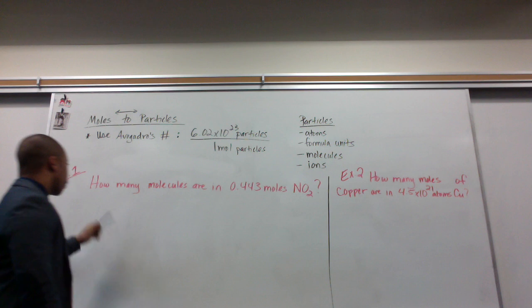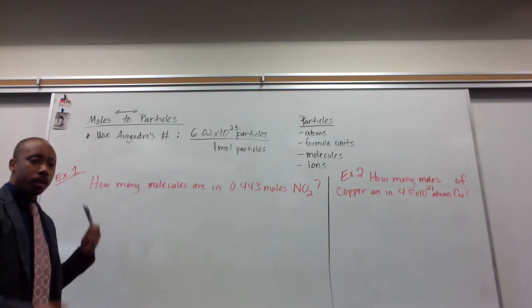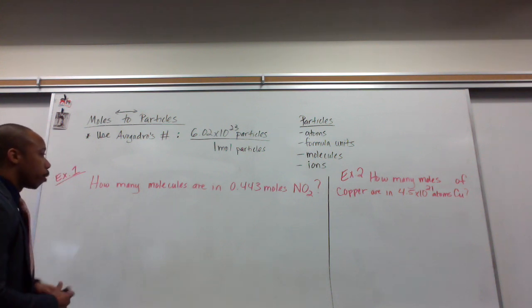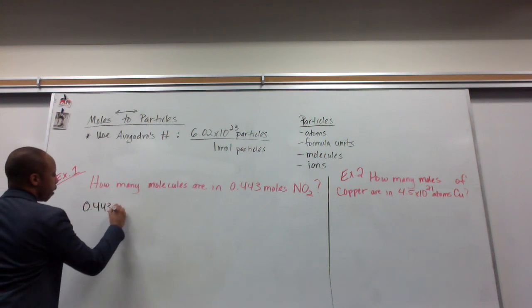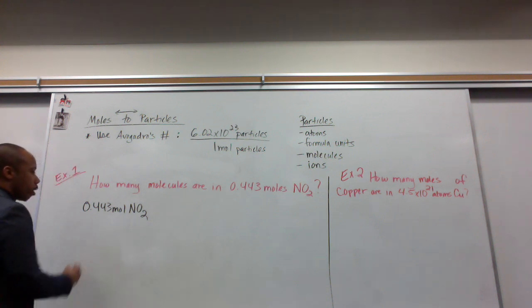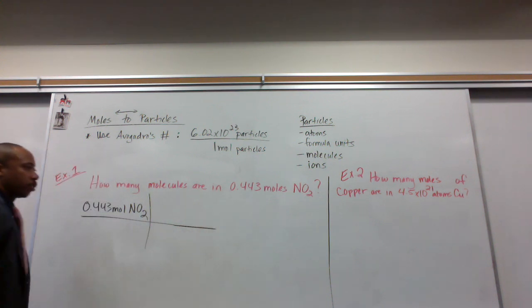Let's look at our first example. How many molecules are in 0.443 moles of nitrogen dioxide? So when we approach this problem, the first thing we do is put what we're given. We're given 0.443 moles of nitrogen dioxide. We're going to put this in our bracket system so we can use dimensional analysis to solve.